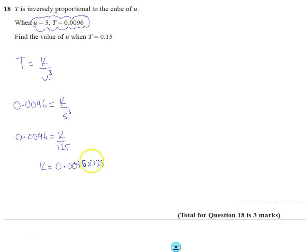We find that k equals 1.2, so we can rewrite our formula as T equals 1.2 divided by u cubed. That's our formula connecting the variables T and u. Now we need to work out the value of u when T equals 0.15.